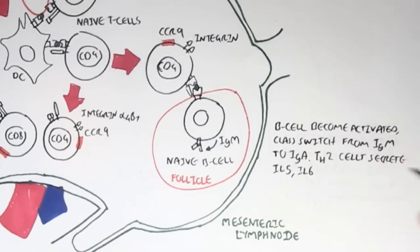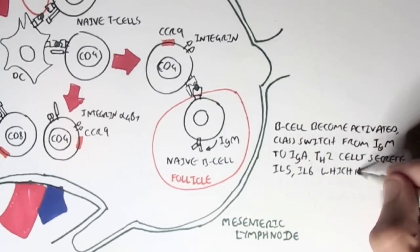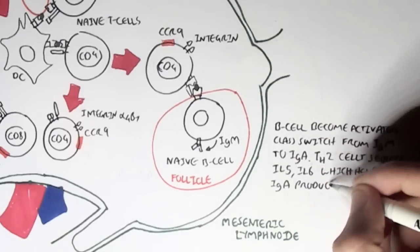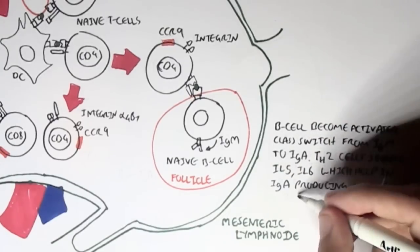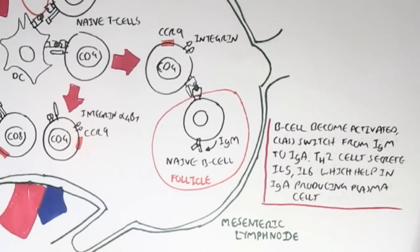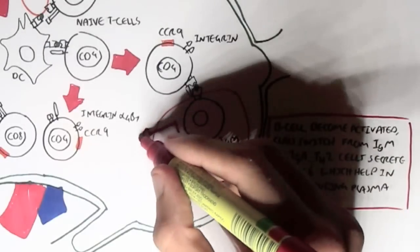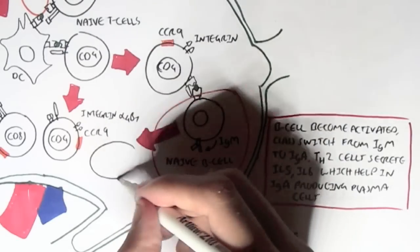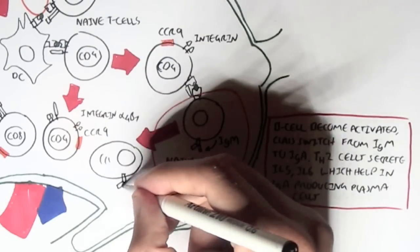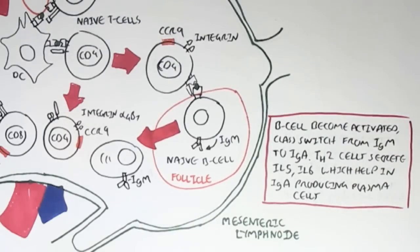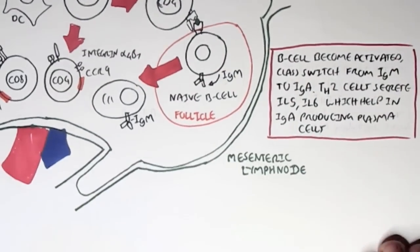A particular T helper cell, the T helper 2 cells, secrete interleukin 5 and interleukin 6, which help stimulate the naive B cells to become IgA producing plasma cells. However, the plasma cells are not actually activated within the lymph nodes. They become activated plasma cells once they leave the lymphatic vessel into the tissues, the designated tissues where the homing receptors will take them.